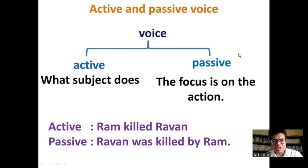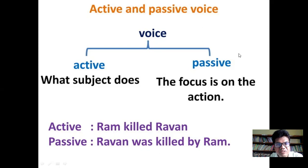Hello students, I hope all of you are okay. Today we are going to discuss questions — there are two kinds of voices: active voice and passive voice. We are going to learn about some rules and regulations that we have to follow to change the sentence from active to passive format. As you can see on the screen, active and passive voice is represented through a diagram showing that voice is of two kinds.